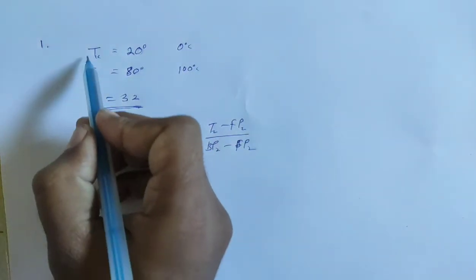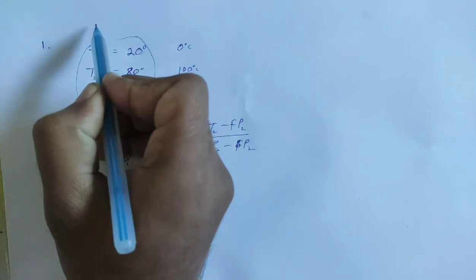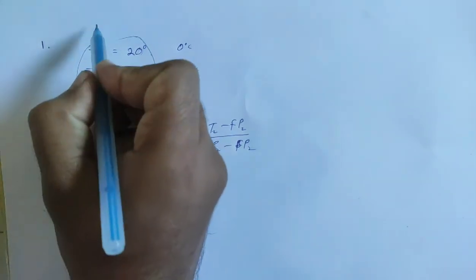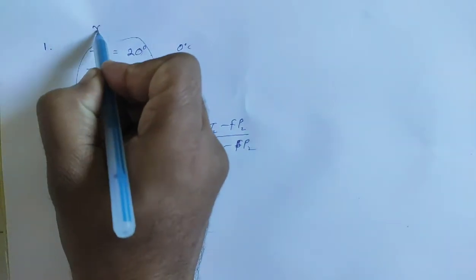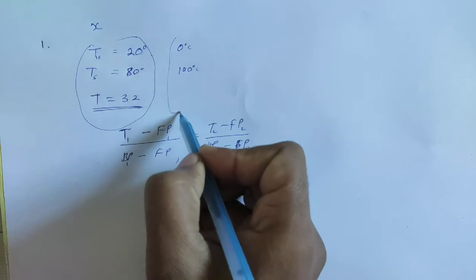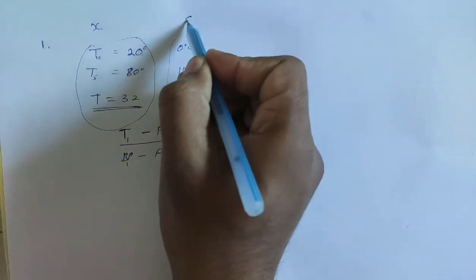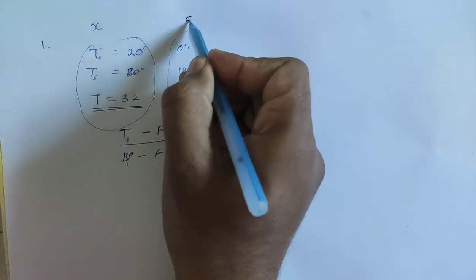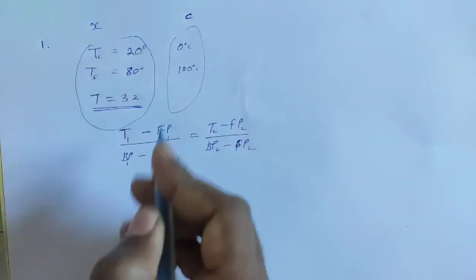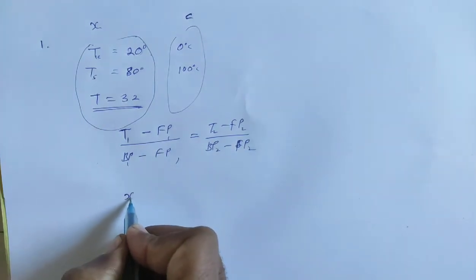If you have one scale, this is one scale which is unknown. It is a scale that we don't know. This unknown scale is the centigrade scale — the Celsius scale.